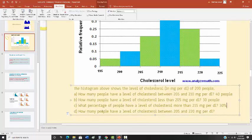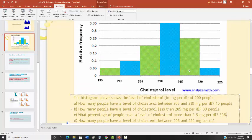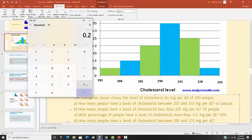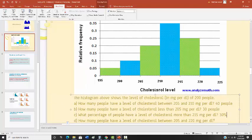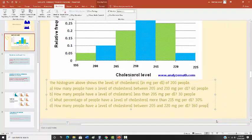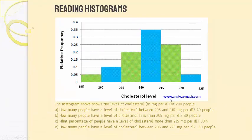Finally, how many people have a cholesterol level between 205 and 220? That would be the green bar at 0.20, plus the next group at 0.35, plus the group up to 220 at 0.25, which totals 0.80. Multiply 0.80 by 200 people and you get 160 people. That's how you read information from these histograms.